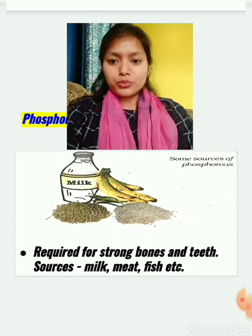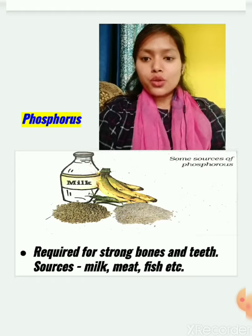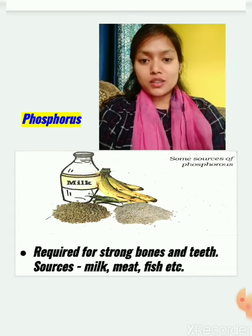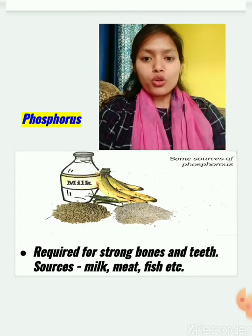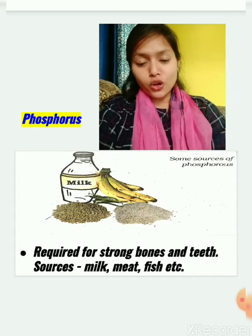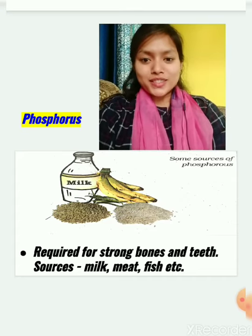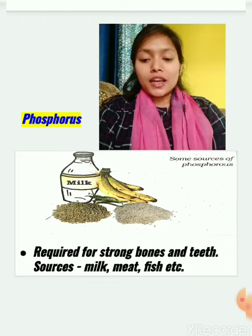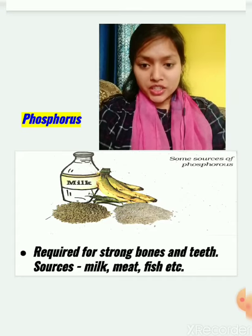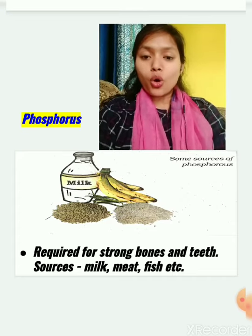The next mineral is phosphorus. Phosphorus is required for strong bones and teeth, similar to calcium. Sources of phosphorus include milk, banana, meat, fish, wheat, and bajra.